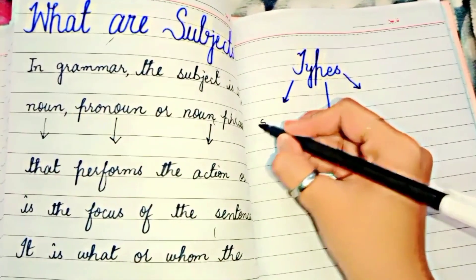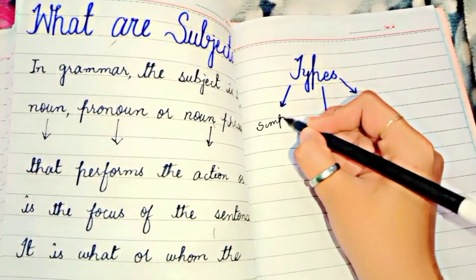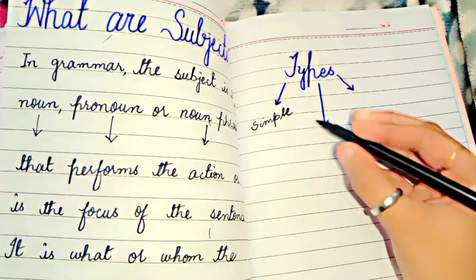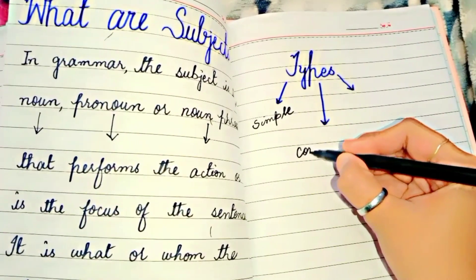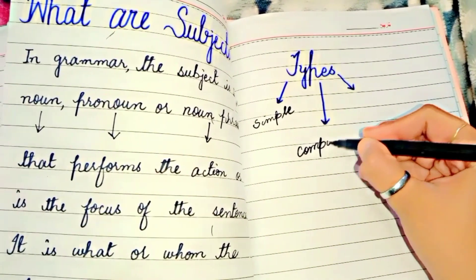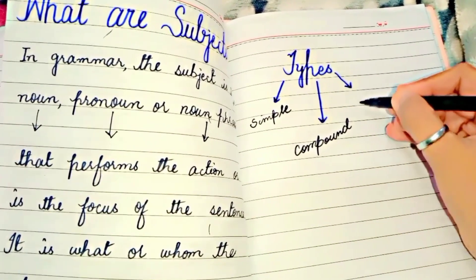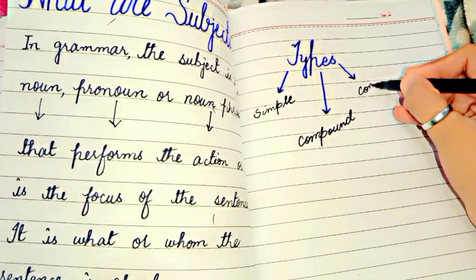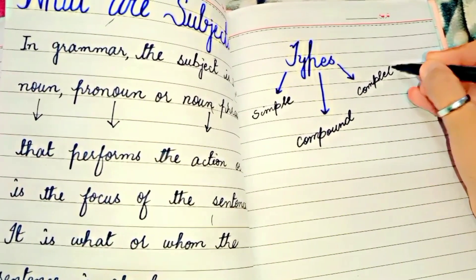Types — we have three types. First, we have simple subjects. At number two, we have compound subjects. And number three, we have complete subject.